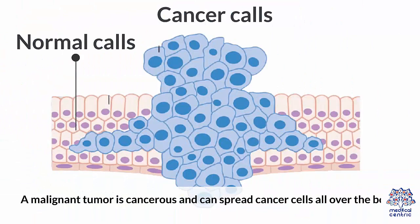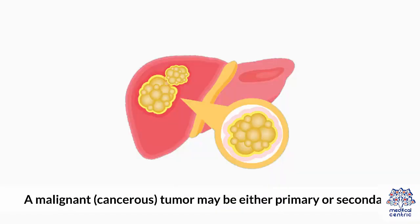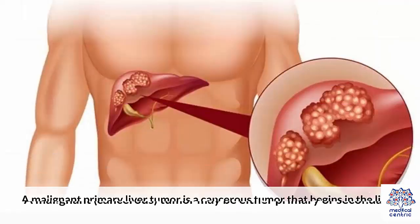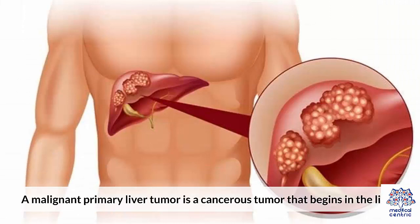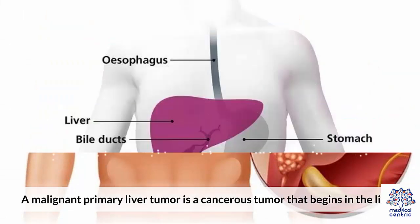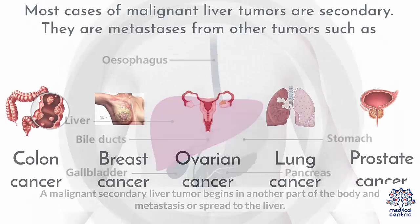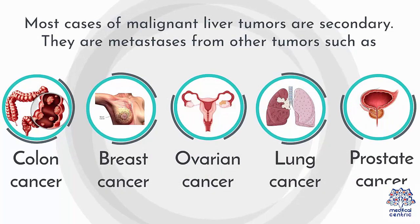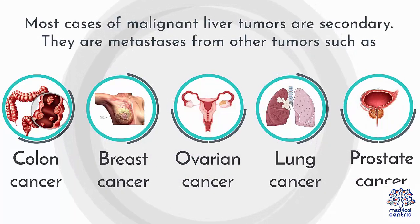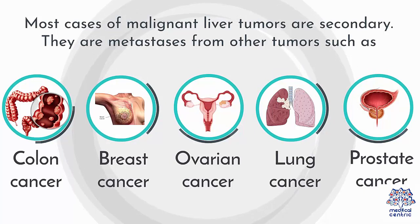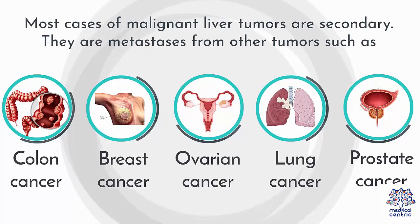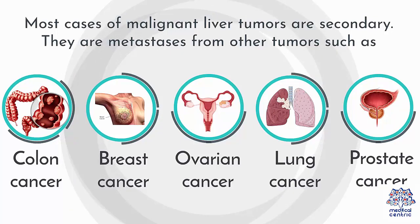A malignant tumor is cancerous and can spread cancerous cells all over the body. A malignant or cancerous tumor may be either primary or secondary. A malignant primary liver tumor is a cancerous tumor that begins in the liver, while a malignant secondary liver tumor begins in another part of the body and metastasizes or spreads to the liver. Most cases of malignant liver tumors are secondary, being metastases from other tumors such as colon cancer, breast cancer, ovarian cancer, lung cancer, prostate cancer, etc.